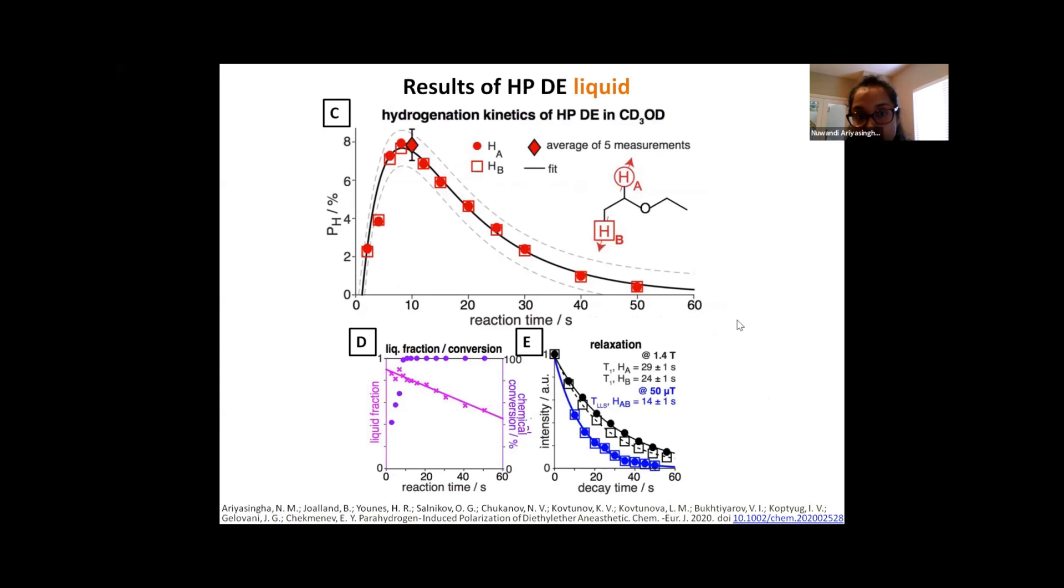We also studied hydrogenation kinetics by varying the parahydrogen bubbling time. And this plot here shows the percent polarization versus the reaction time. I want to mention that for each of these spectrum measurements, we used a new sample, and all of these are averages of five different measurements. So what we can see here is at around eight to 10 seconds, we see the highest polarization value, which was around 8.4%. And also we see complete conversions fairly quickly at around again eight to 10 seconds when the graph plateaus here. We also studied the relaxation data of hyperpolarized diethyl ether in the liquid, both at 1.4 tesla and at the earth magnetic field. And these were the data obtained for the relaxation.